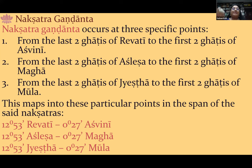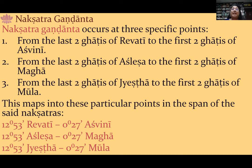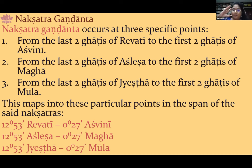To summarize the layers: the specific Gandanta degrees given by Parashara are the most acute. Then the entire last and first pada of these nakshatras is also problematic. Then the nakshatras themselves entirely are problematic. We are saying, A — not only these specific Gandanta degrees, but the entire last pada of nakshatras in Jalarashi and first pada of nakshatras in Agni-rashi are troublesome. And furthermore, the entirely these six nakshatras are problematic — and it is not just Chandra, but any graha placed here.